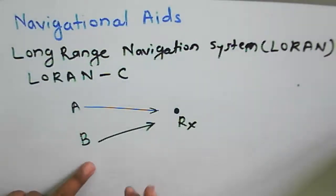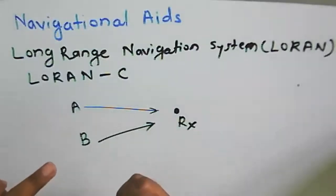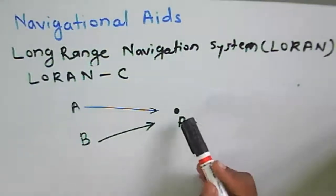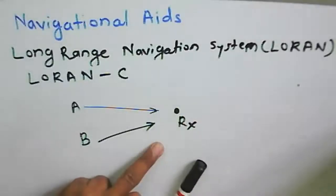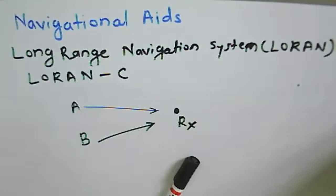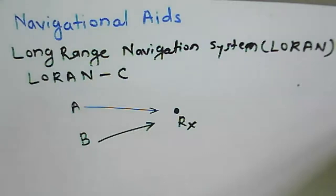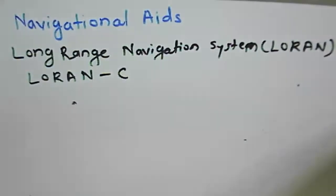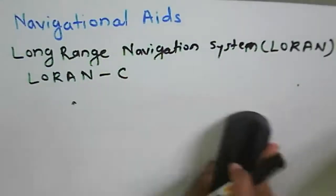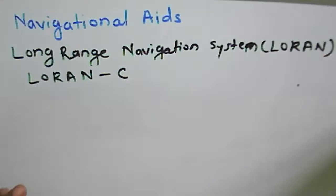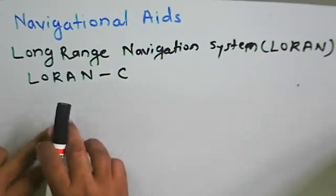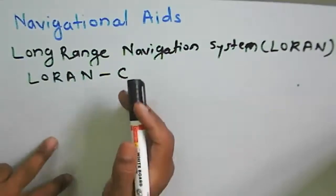The intersection of two or more hyperbolic lines of position produces the position of the receiver — the ship or vessel. All users get signals from the transmitting stations. One station is master and another is secondary. From the signals of master and secondary, the position of the vessel is determined and displayed on the display device.